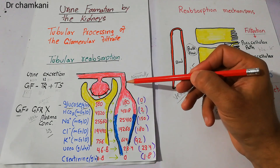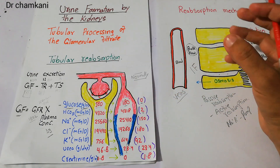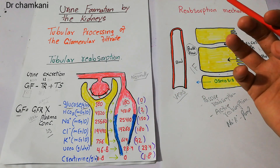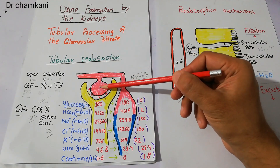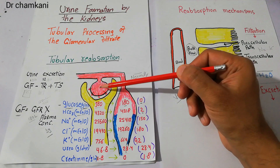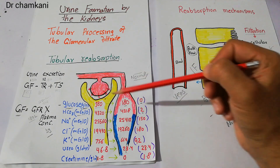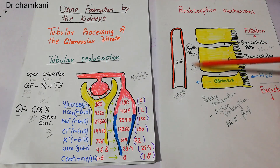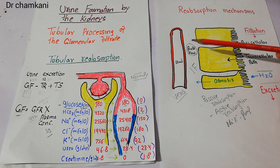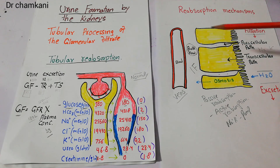At the glomerular end, the hydrostatic pressure is very high, pushing the filtrate out into the Bowman's capsule. At the peritubular capillary end, the pressure is low, so through bulk flow, water and different solutes move through various forces from the interstitial or intercellular spaces into the peritubular capillaries through different mechanisms.